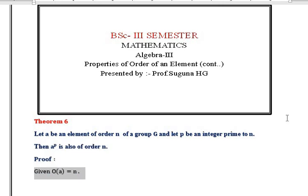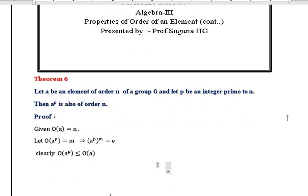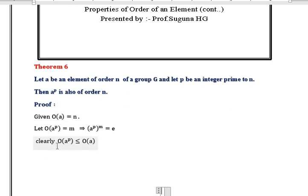Proof. Given order of A is equal to n. Let order of A to the power of P equal m, which implies that (A^P)^m = e, by the definition of order of an element. Clearly, order of A^P is less than or equal to order of A, that is m is less than or equal to n.